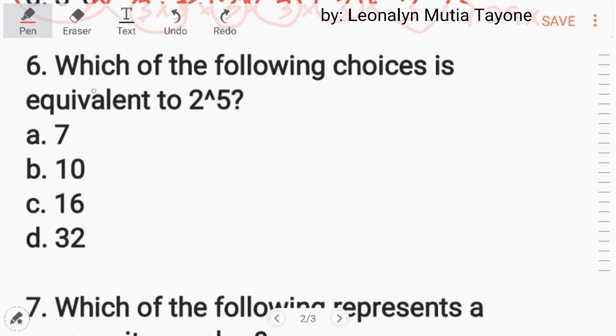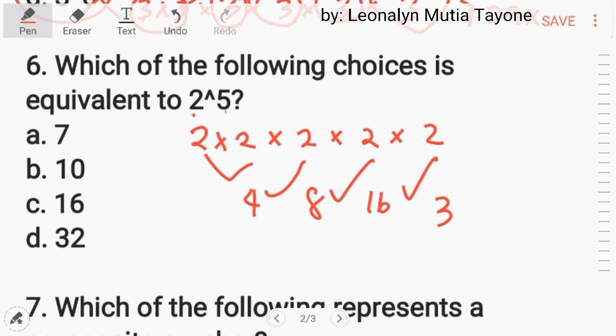Number 5. Which of the following choices is equivalent to 2 to the power of 5? 2 times 2, limang 2. I-multiply natin. This is 4, times 2 that is 8, times 2 that is 16, times 2 and that is 32. So the answer is letter D.